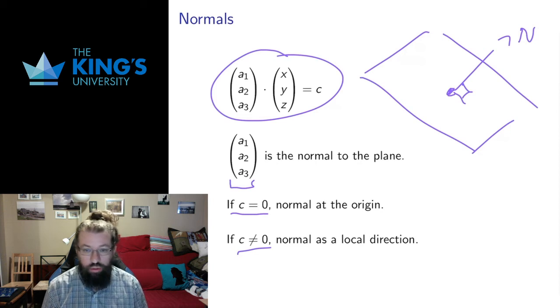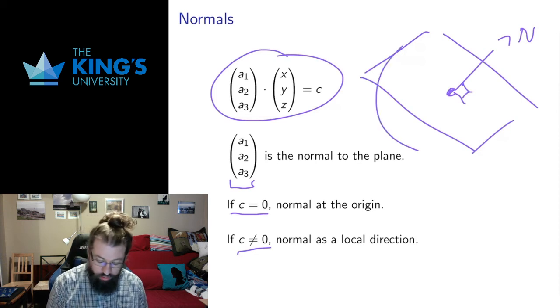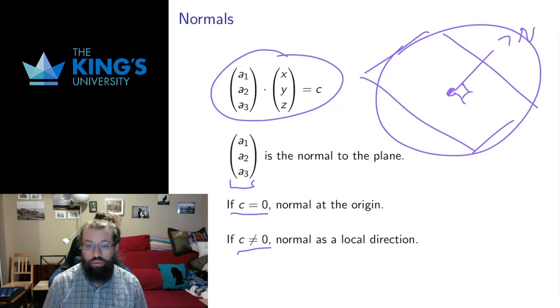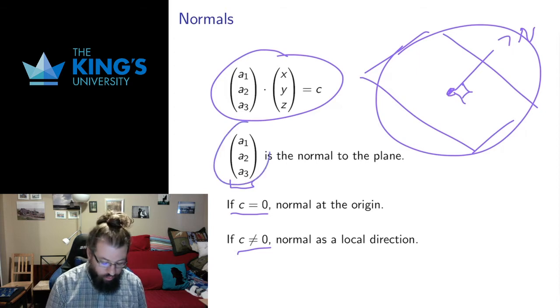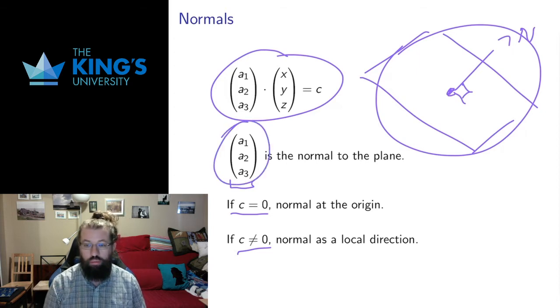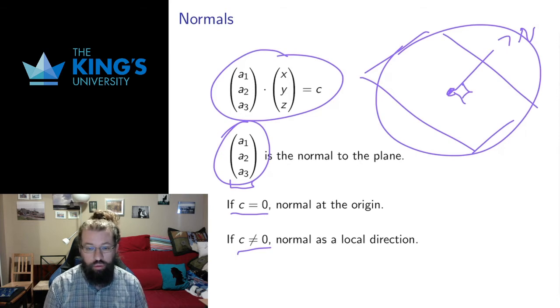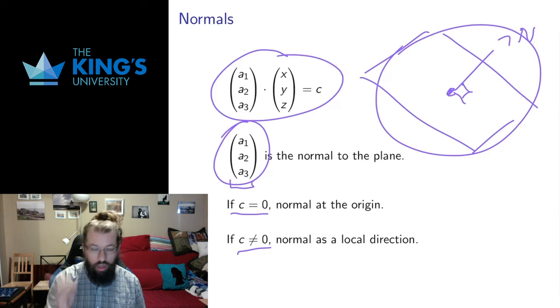If c is not equal to zero, then the plane doesn't go through the origin. But this still works, this picture still makes sense, as a local direction. So if I think of a point on my plane and momentarily pretend the origin is there, then this vector of constants will still be perpendicular to the plane as if that were the origin. And that's what we talk about local directions. Local directions are at a point, as if momentarily we pretended that point was the center of space.